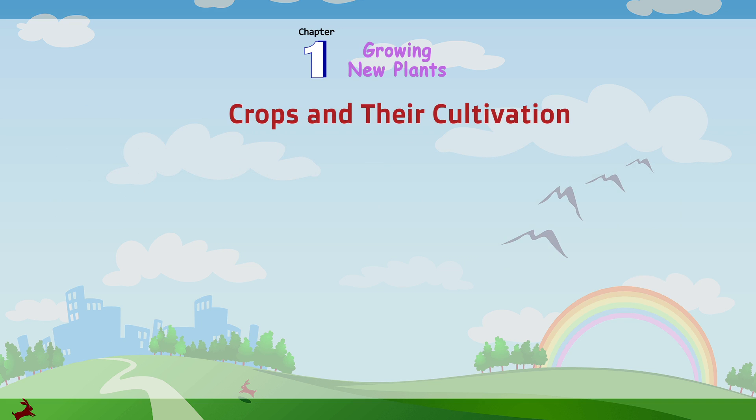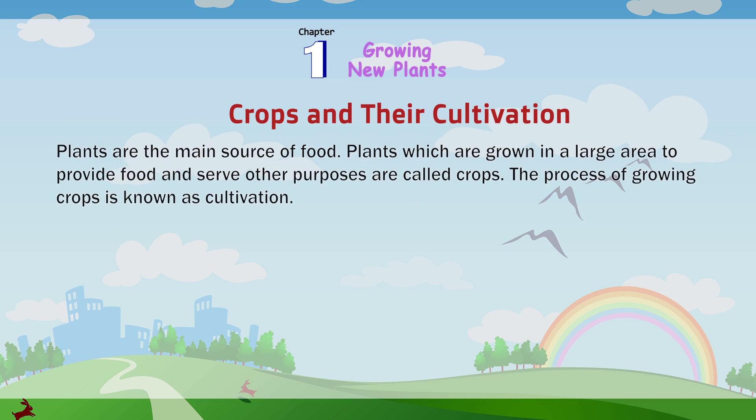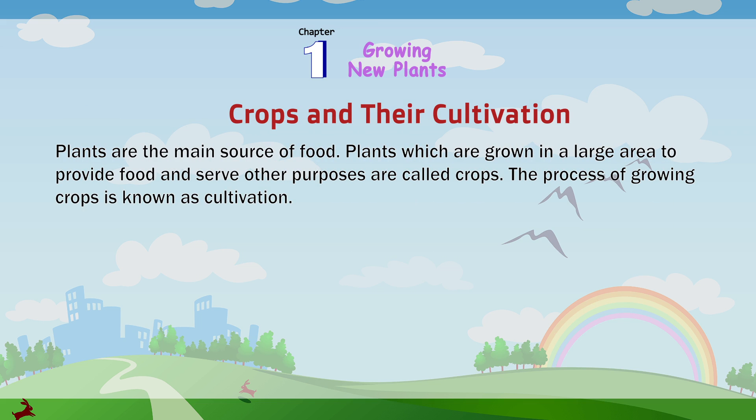Crops and their cultivation. Plants are the main source of food. Plants which are grown in a large area to provide food and serve other purposes are called crops. The process of growing crops is known as cultivation.